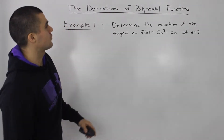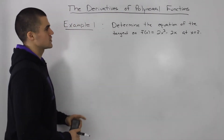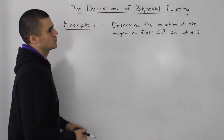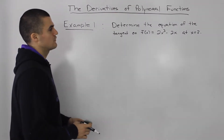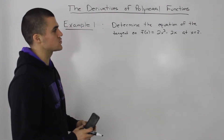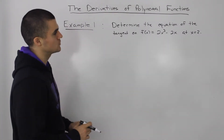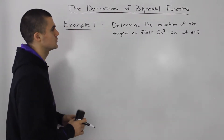Example one for the derivatives of polynomial functions. Determine the equation of the tangent on f of x equals 2x cubed minus 2x at x equals 2.